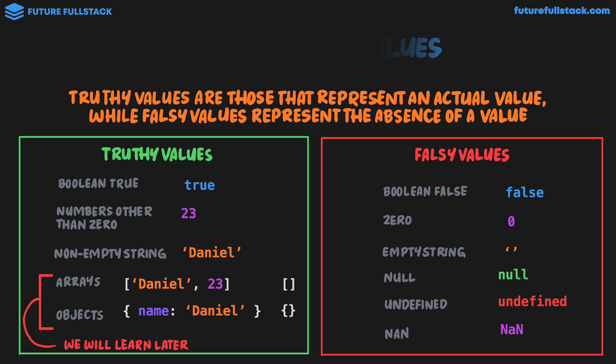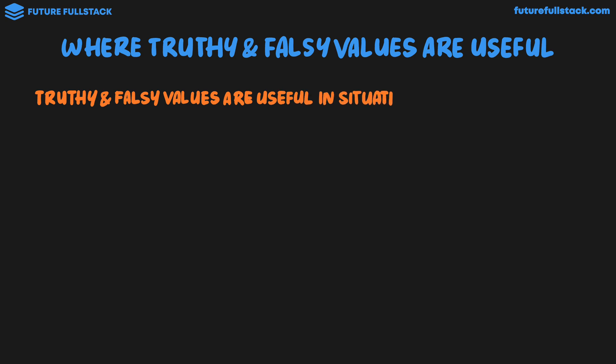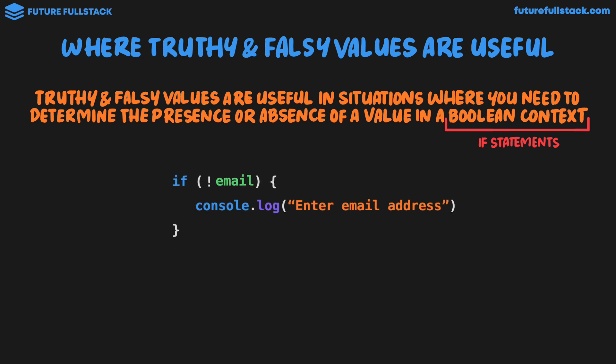So the big question you're going to have now is where truthy and falsy values are useful. They're very useful in two circumstances. Truthy and falsy values are useful in situations where you need to determine the presence or absence of a value in a boolean context. The boolean context we've come across so far is inside if statements. Looking at this example: if not email, console.log "enter your email address."